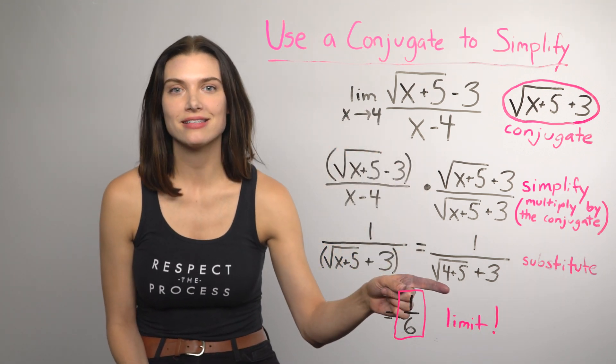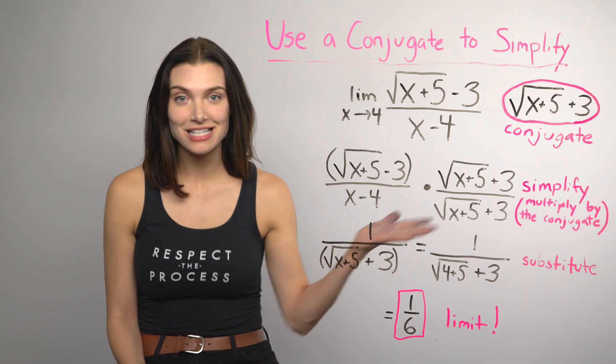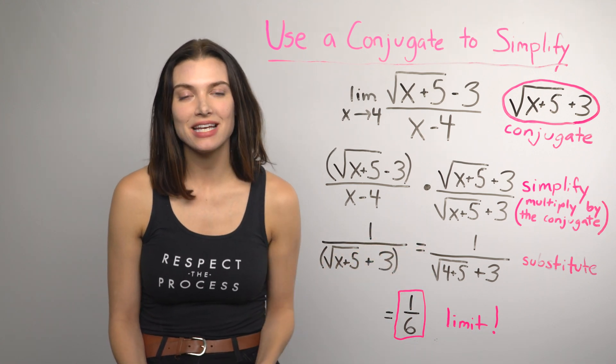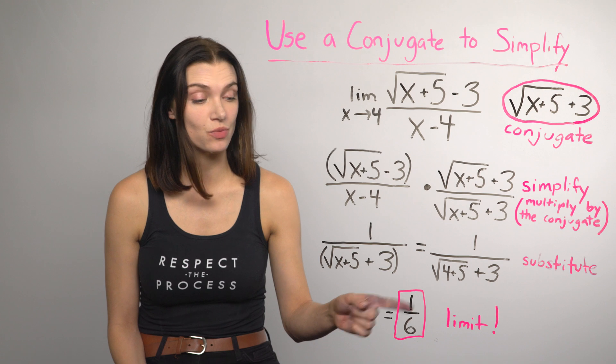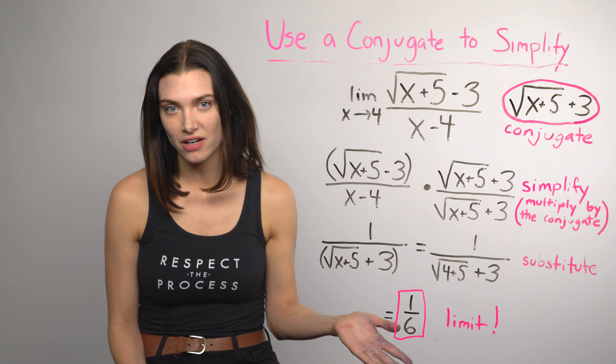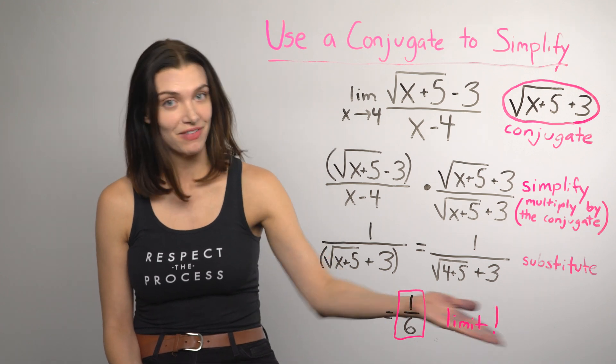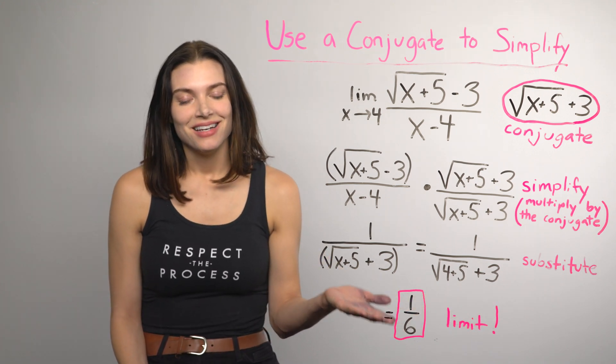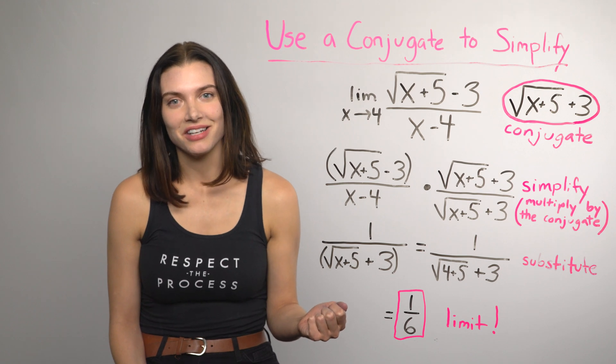So I put 4 in for x into the simplified function, and substitution works again. The limit as x approaches 4 of this function is 1 over 6. So for this whole thing, I used the conjugate of the numerator to simplify the function, try substitution, and found the limit. But of course, there's still another way.